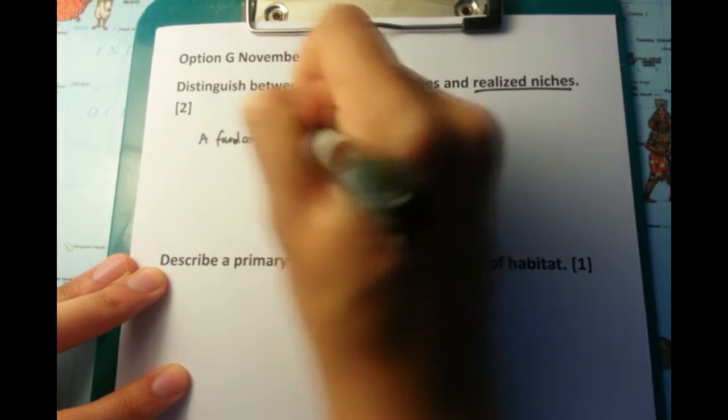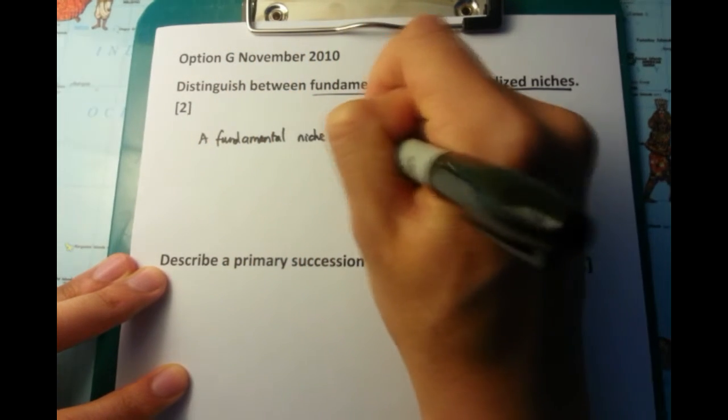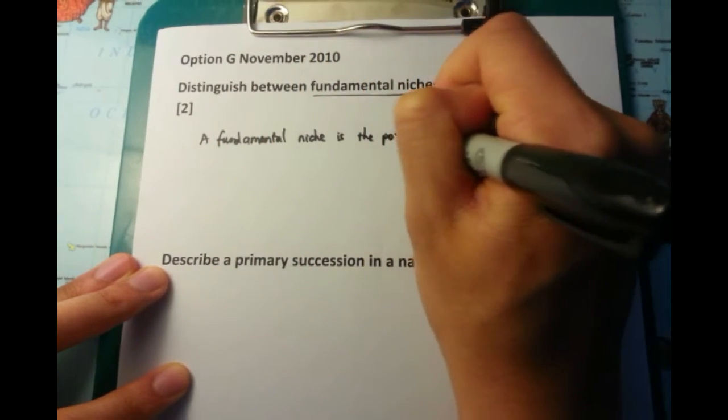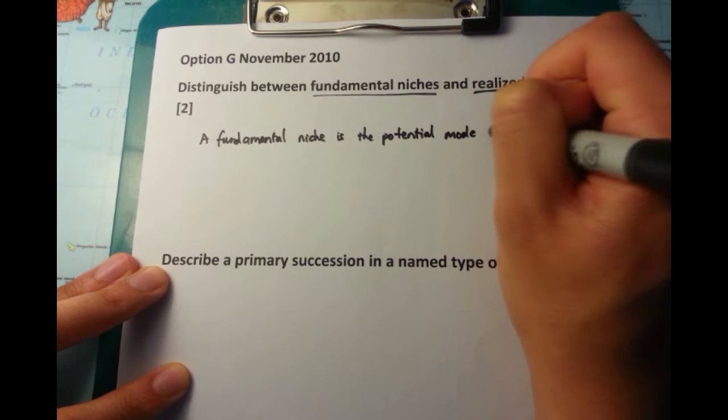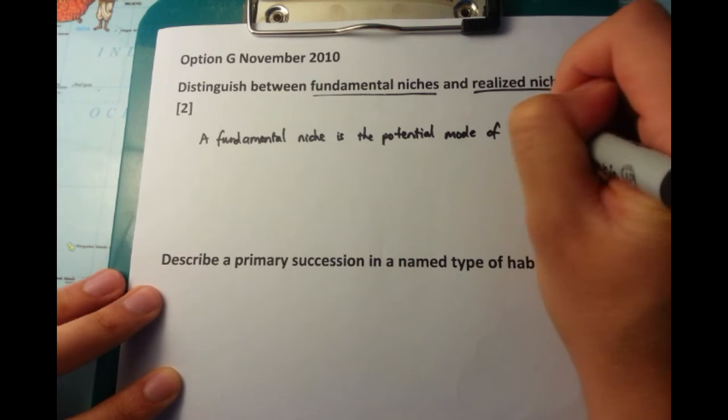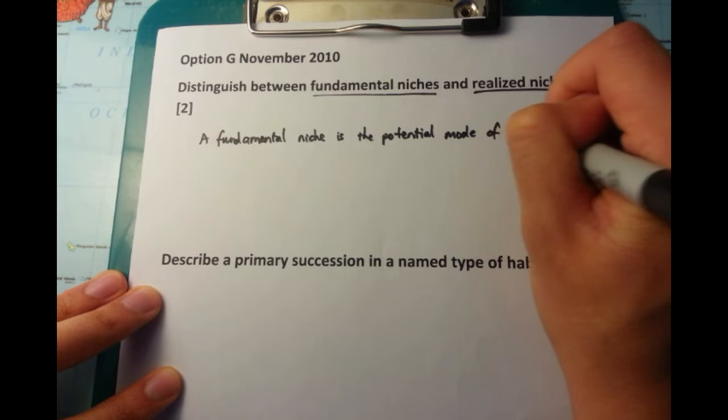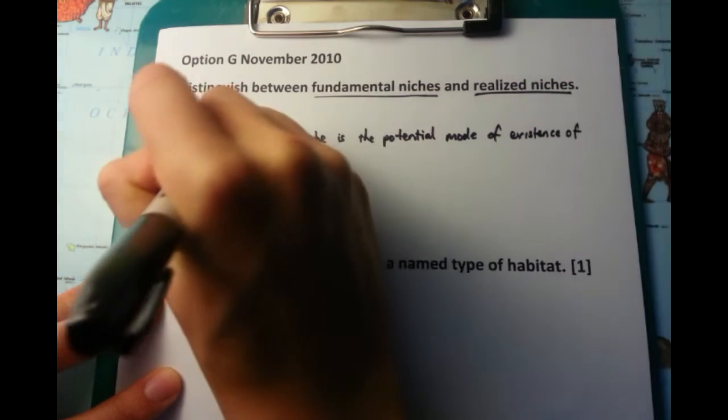First thing I'm going to talk about is the definitions. You need to know that a fundamental niche is the potential mode of existence of a species, so the absolute maximum where it could reside, whereas the realized niche is a subset of that.